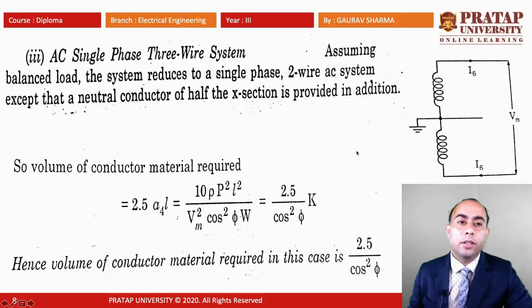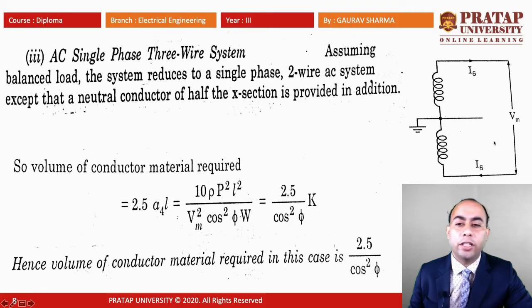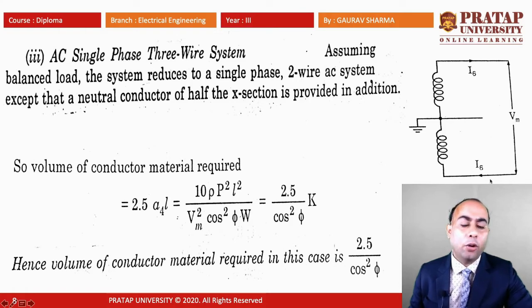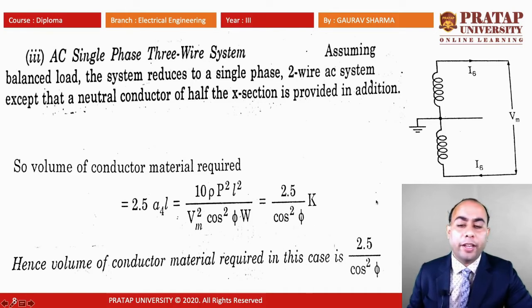For the single phase three wire system, the third wire is earthed and the current flow in the outer conductors is I6 and the voltage is VM. The cross section of the third wire is just half of the outer conductor. The volume of conductor material required in this system is 2.5·A4·L = 2.5K/cos²φ. Hence the volume required is 2.5/cos²φ times that required in the DC two wire system.